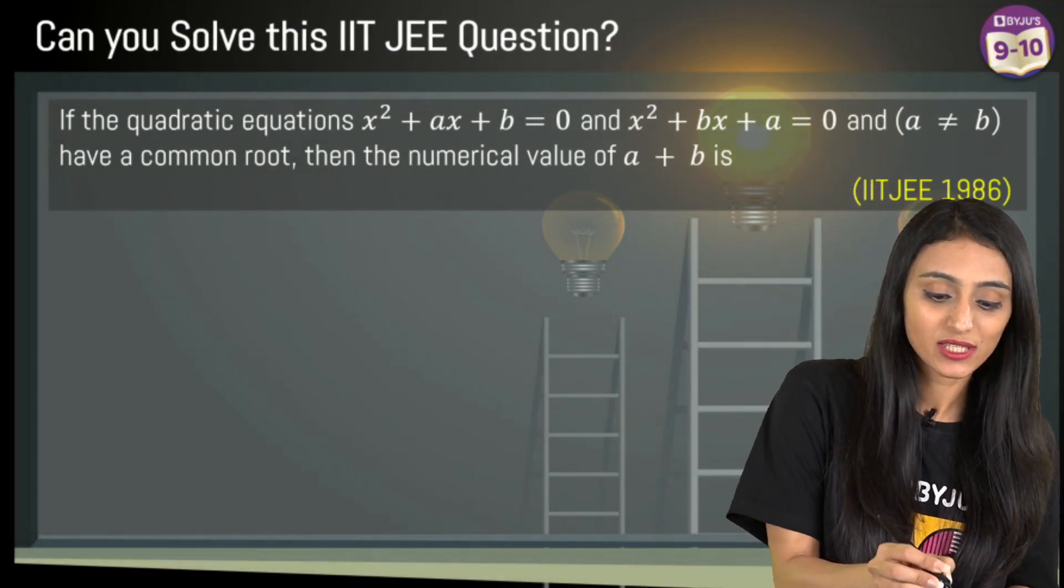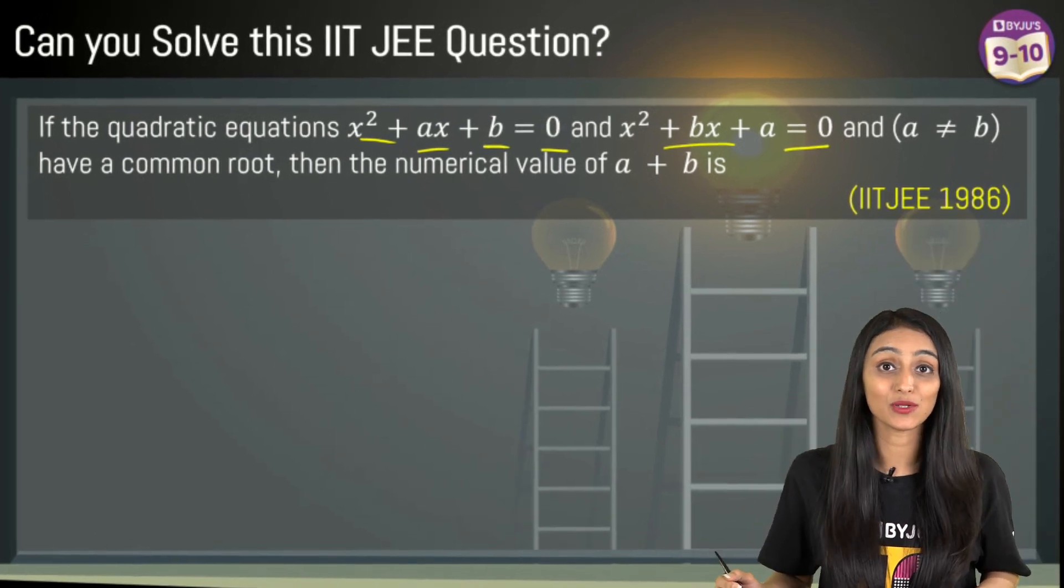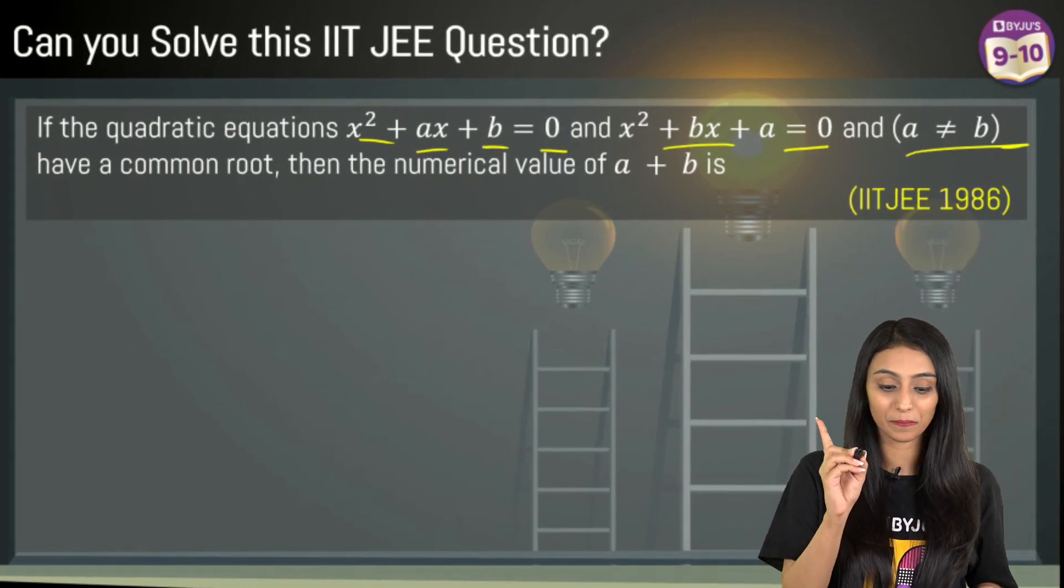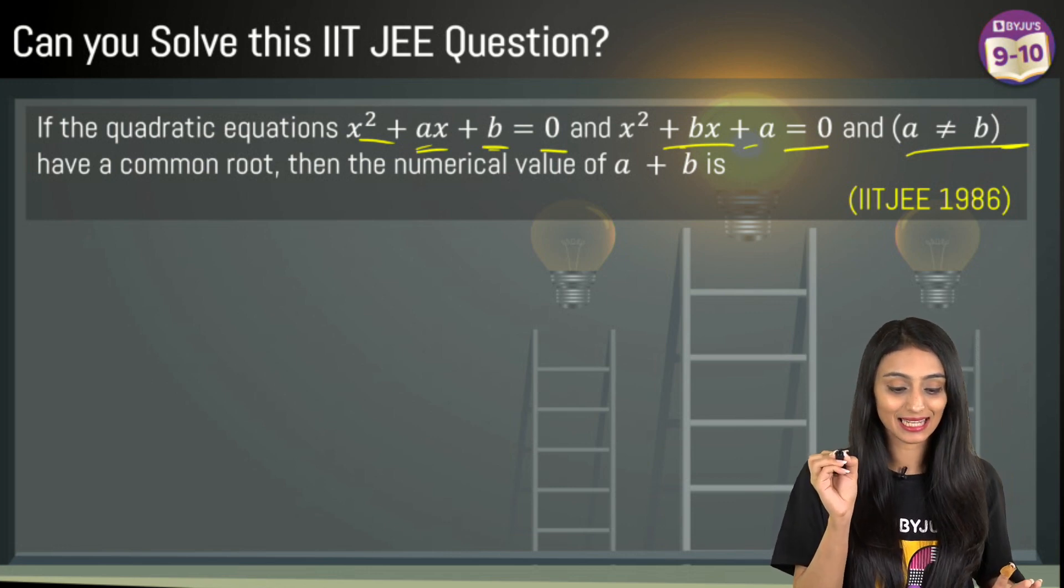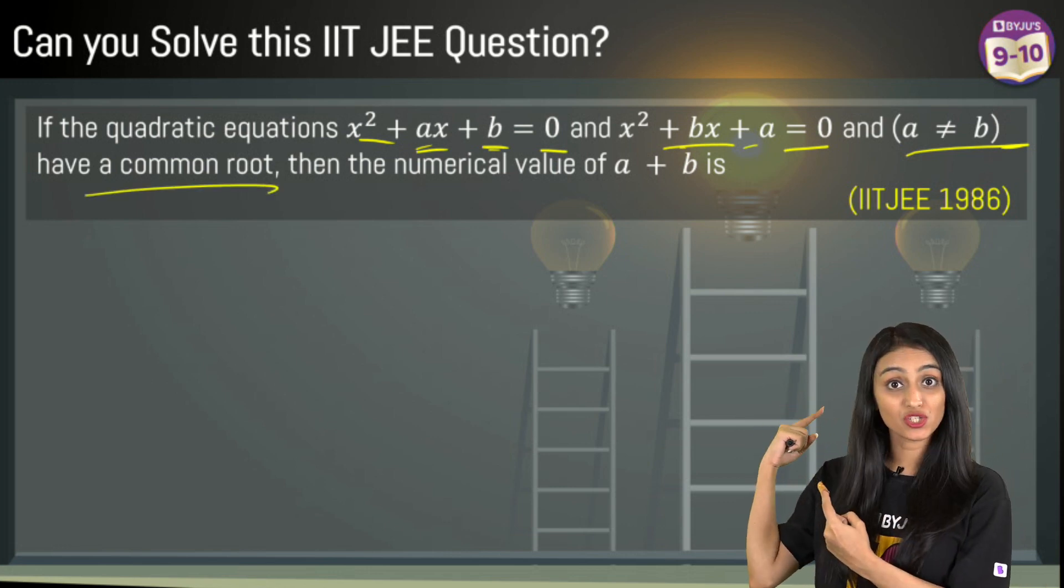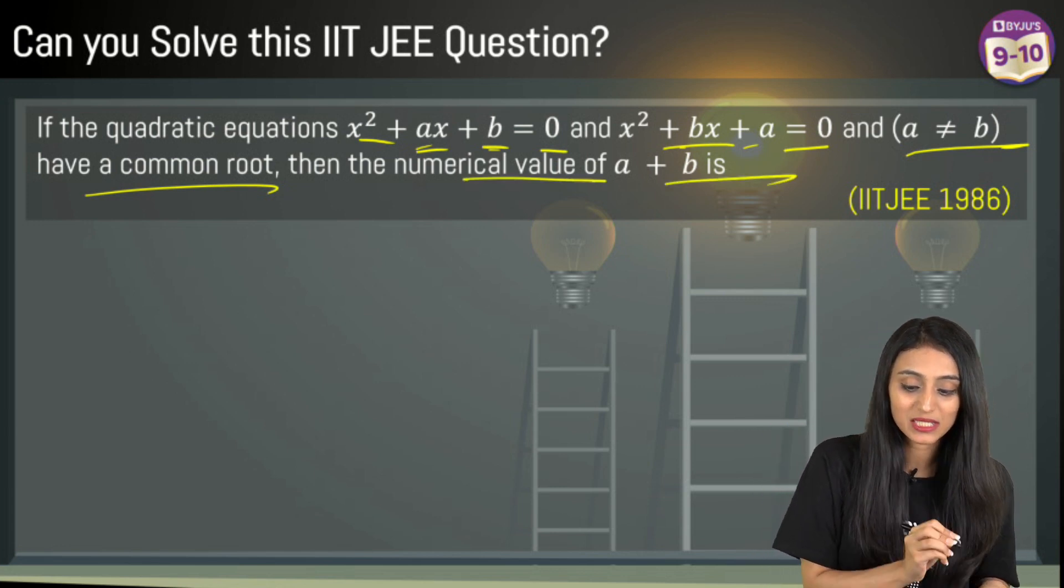If the quadratic equations x² + ax + b = 0 and x² + bx + a = 0 and a ≠ b. See they both have got these common variables a and b over here. They have a common root. So these two quadratic equations have a common root then the numerical value of a + b is.